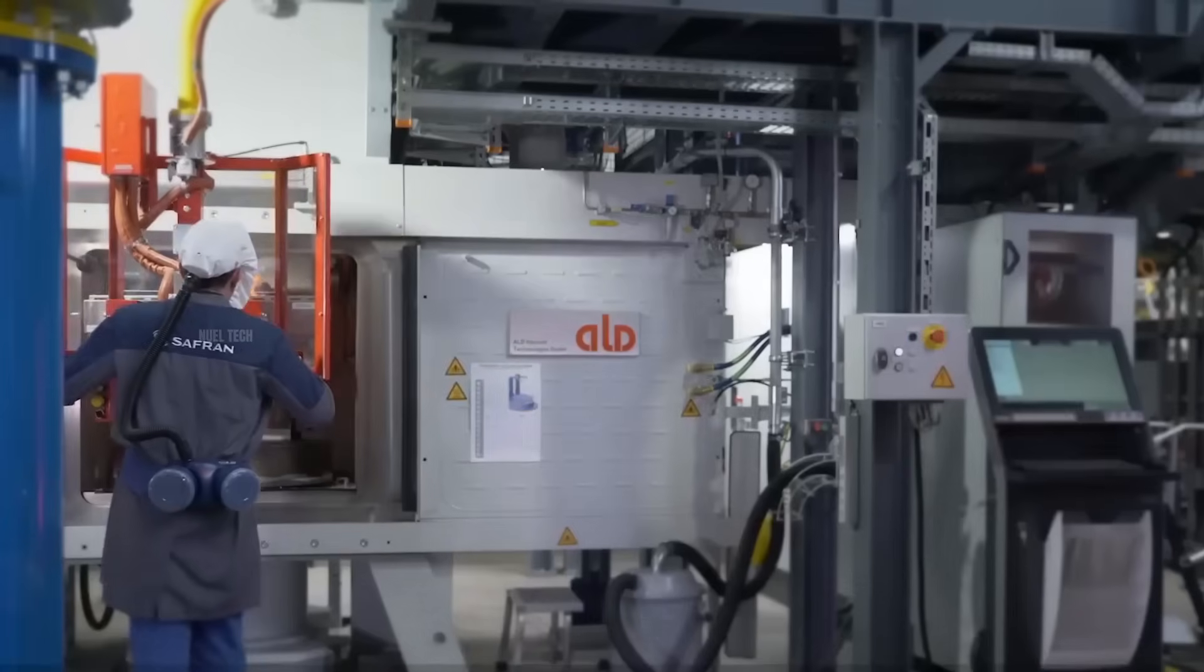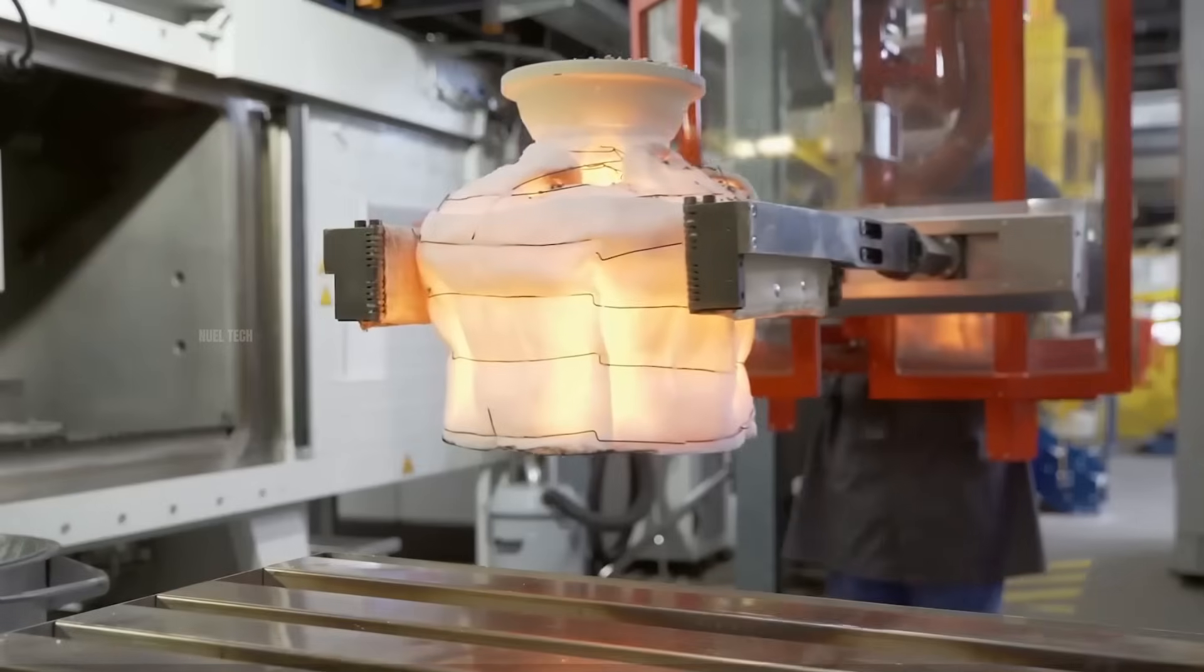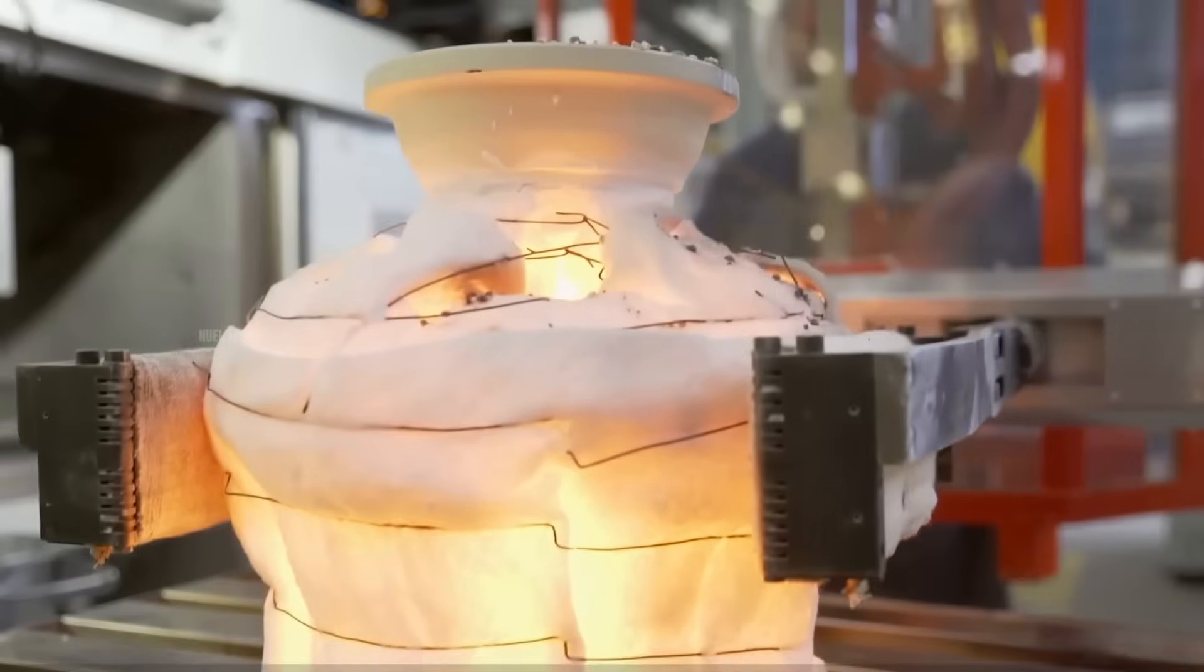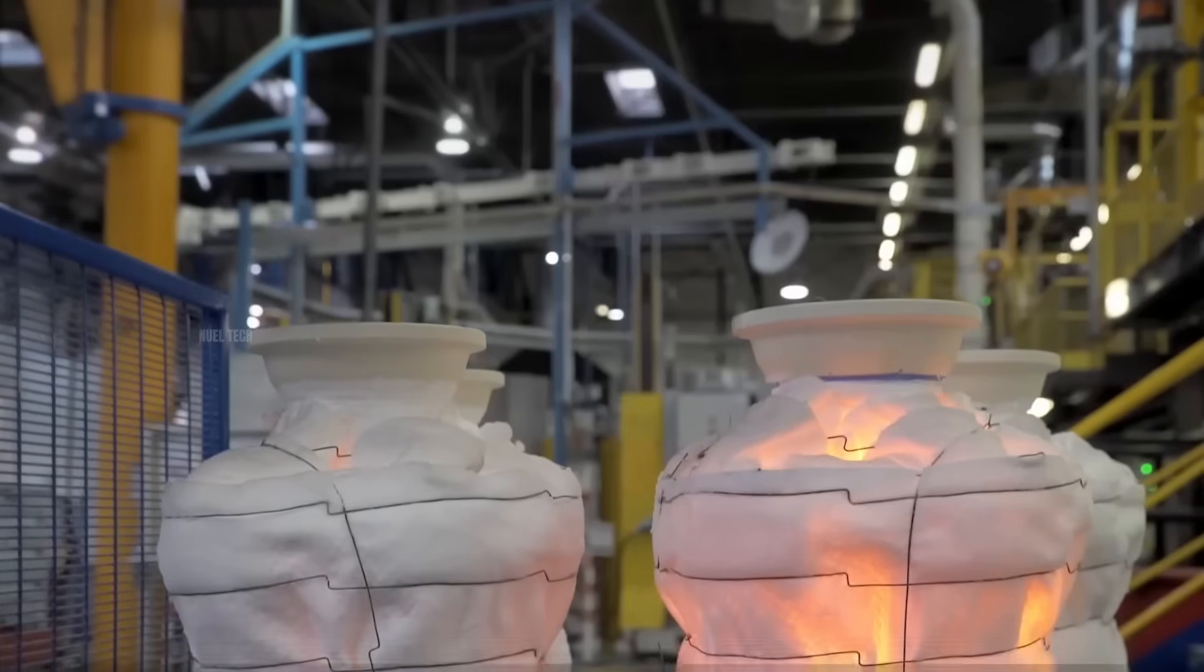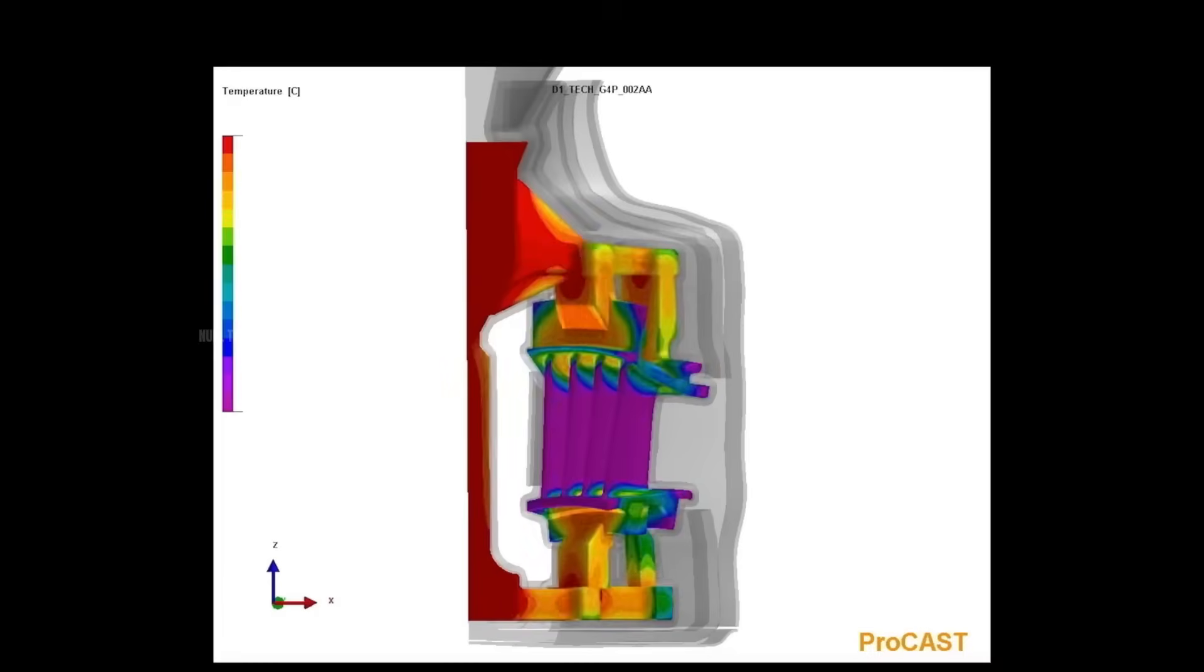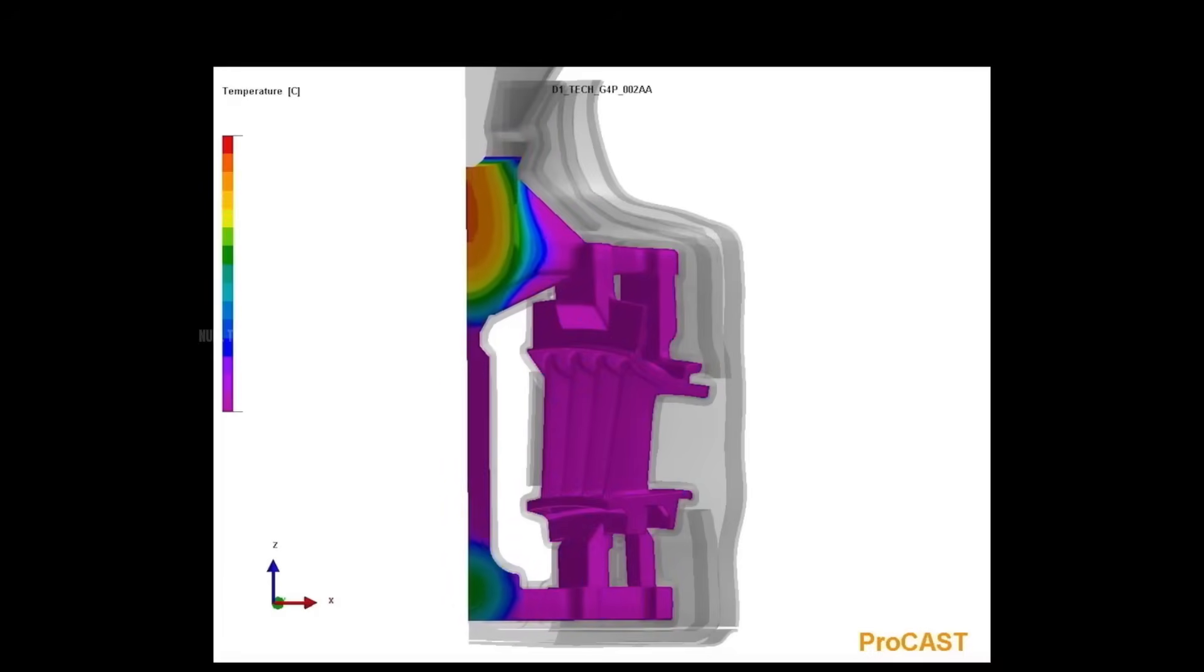Before pouring, the mold is also preheated to avoid thermal shock due to sudden temperature differences. When poured, the molten metal fills all the cavities within the mold and is allowed to cool gradually using a technique called directed solidification, which causes the metal to solidify from the tip to the base.